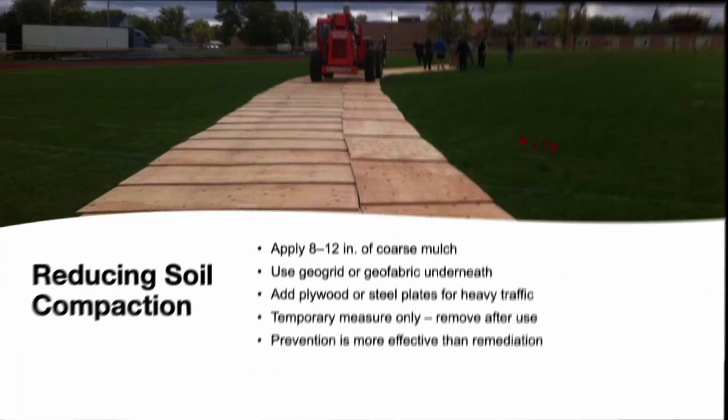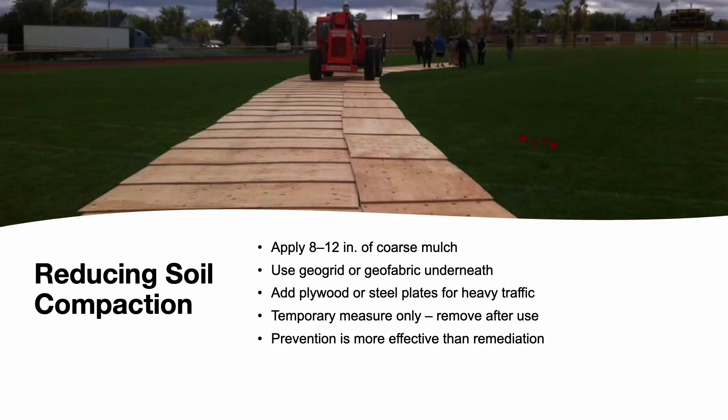Soil compaction is a major threat to tree health during construction. To reduce this, spread 8 to 12 inches of coarse mulch like wood chips around the trees. For added protection and easier cleanup, place geofabric underneath. Further weight distribution can be achieved with plywood, steel plates, or trackway systems. Remember, this mulch layer is temporary — it should be reduced or removed post-construction to avoid suffocating the root zone. Preventing compaction is always easier than fixing it later.